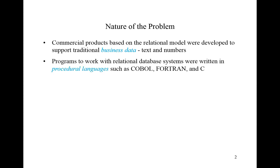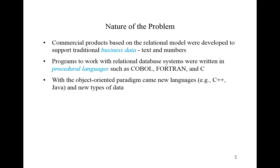The programs that worked with relational database systems were written in procedural languages such as COBOL, FORTRAN, and C. Over time, object-oriented programming languages started to take off, and that meant these also would have the ability to communicate with relational database products. So languages such as C++ and Java became available as a means of communicating with our relational database products.